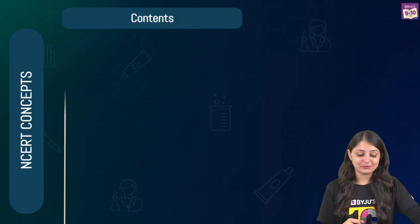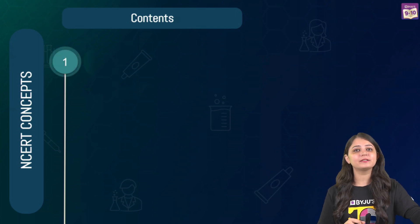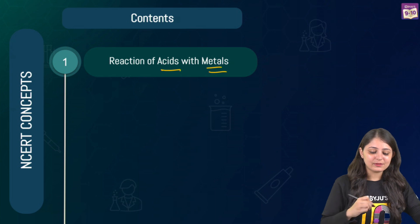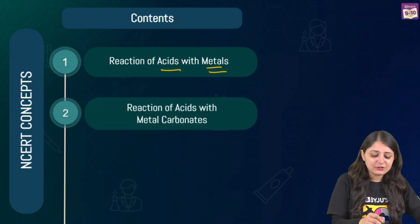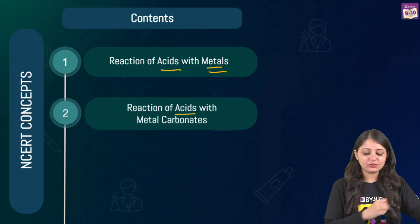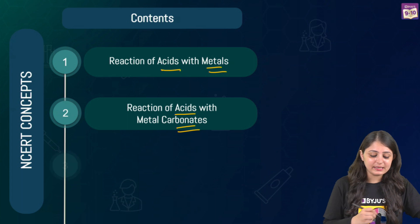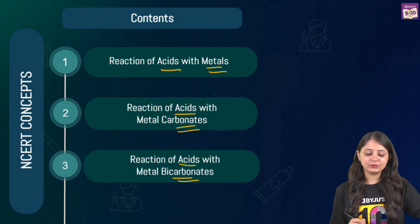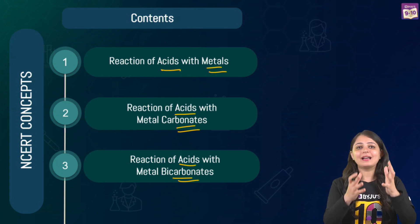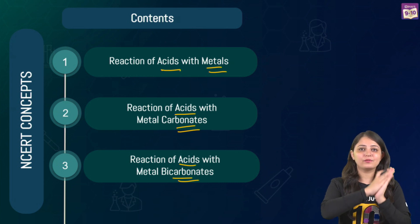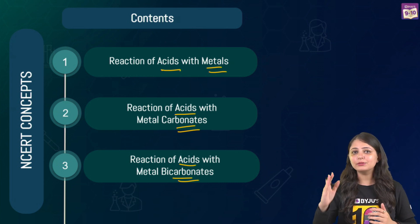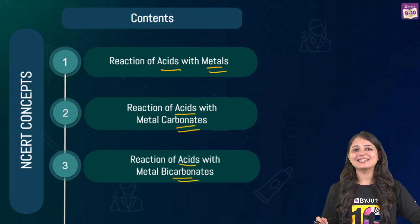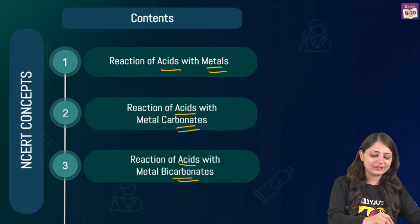Coming back to our agenda for today — we'll be covering three very important NCRT topics: first, reaction of acids with metals; then, reaction of acids with metal carbonates; and finally, reaction of acids with metal bicarbonates. Let's get started with the first one.